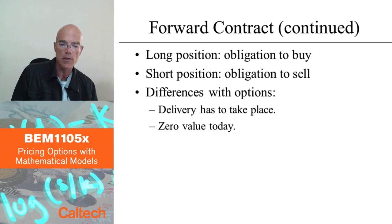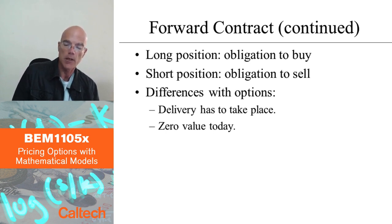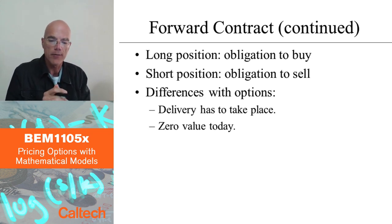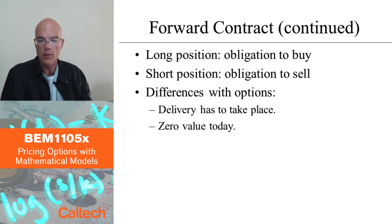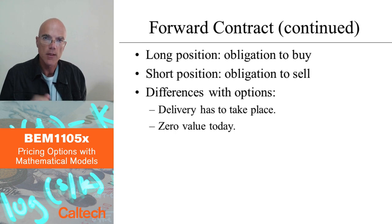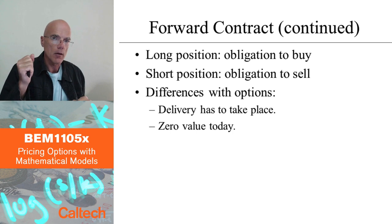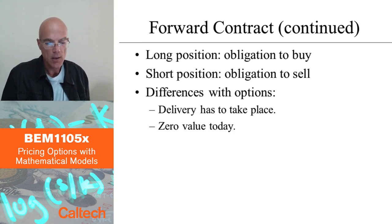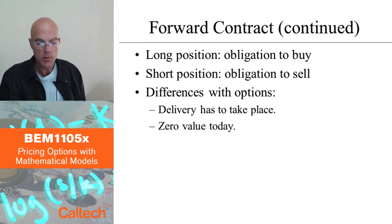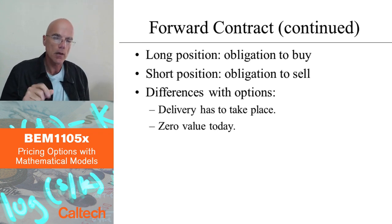Recapping: a long position is an obligation to buy, and a short position is an obligation to sell the underlying in the forward contract. I'm using the word obligation to make a distinction from options. In a forward contract, you have to buy that pound of sugar for that many dollars if you are long, or you have to sell it if you are short — you don't have an option, you have to do it. With an option, call and put options are similar to forward contracts except the party buying the option is not obligated — they have the option to buy or sell. Because of that, options will not have zero value at the beginning of the contract; they will have positive value, and this course is about computing that value.